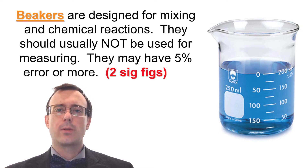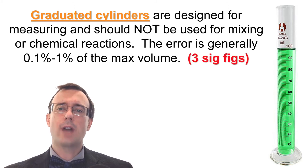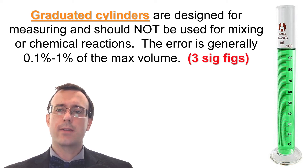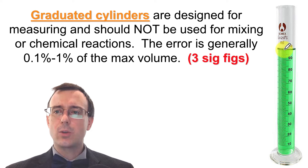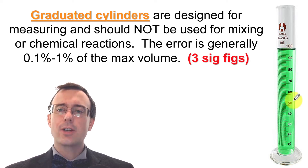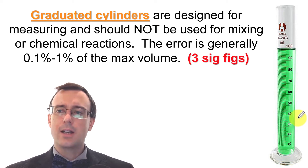So what should you use to measure volumes? You can use a graduated cylinder. These are specifically designed for measuring volumes and should not be used for mixing or chemical reactions. The error is typically between 0.1% and 1% of the max volume, meaning you'll get about three significant figures. The shape allows much more precision, and graduated cylinders are typically calibrated — meaning someone measures exactly how much volume they hold and prints the numbers accordingly, unlike beakers and Erlenmeyer flasks.